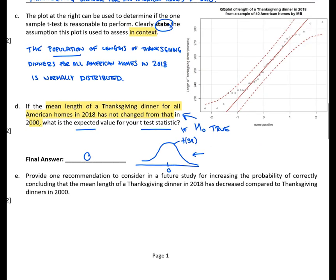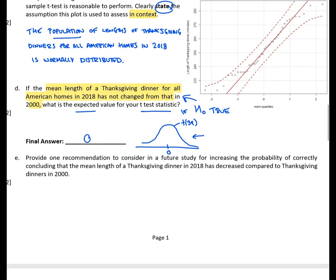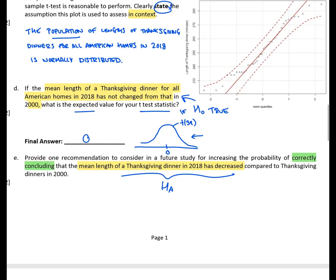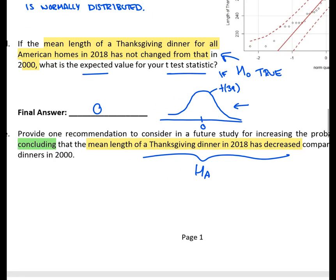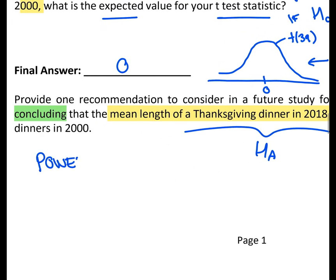And then finally, question E, provide one recommendation to consider in a future study for increasing the probability of correctly concluding that the mean length of a Thanksgiving dinner in 2018 has decreased compared to Thanksgiving dinners in 2000. So again, let's kind of break down what they're trying to say here. So they're saying the mean length of a Thanksgiving dinner has decreased. So this right here, we're saying the alternative is true, that there is a decrease in that population mean. And we're saying, and we are correctly concluding this idea. So if we think about what they're asking for here, they're simply talking about the power of the test, the ability to correctly reject H naught.